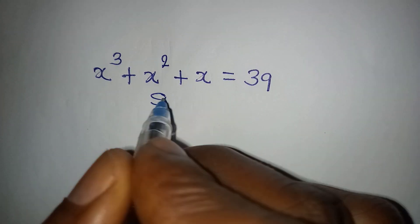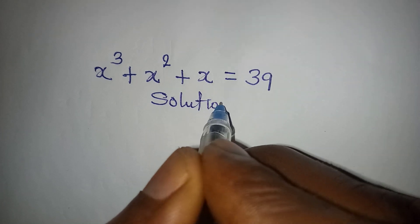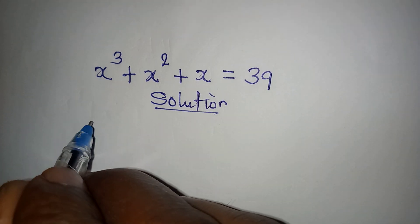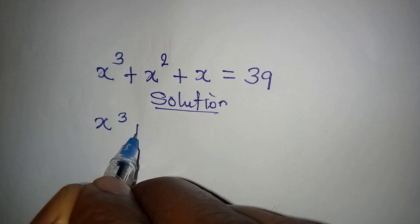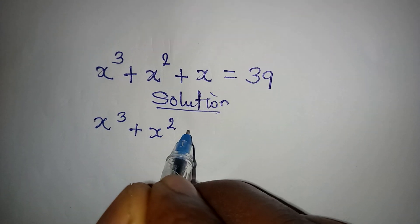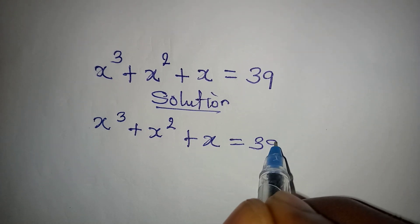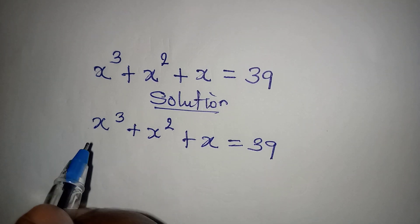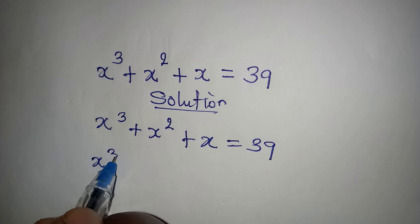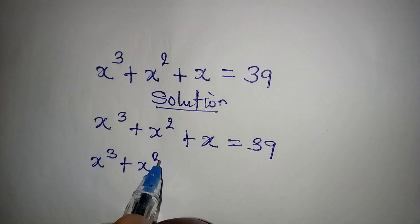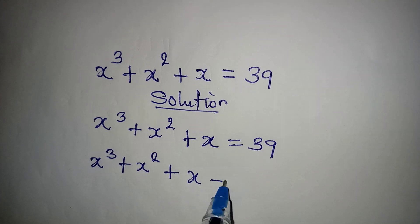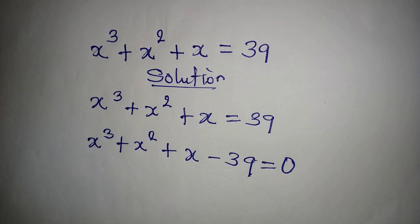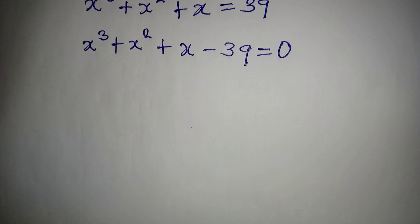Hello everyone, let's provide the solution to this problem completely. We have x to the power of 3 plus x to the power of 2 plus x equal to 39. The first thing we do is bring 39 to the left, so we have x³ + x² + x - 39 = 0.